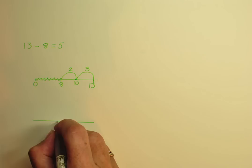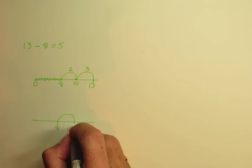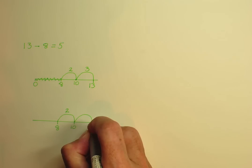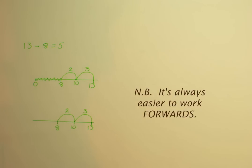At some point, whenever the child is ready, we can stop recording the 0 and the scribbling out and go straight to finding the gap between 8 and 13, working forwards on an empty number line.